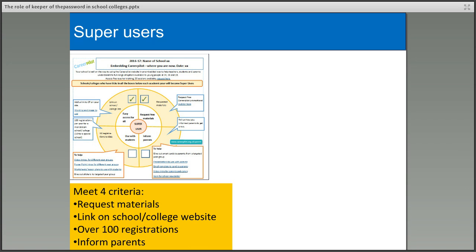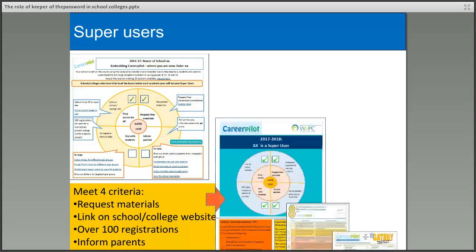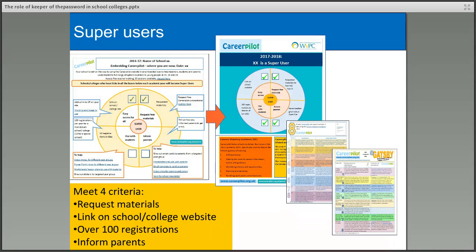We're also encouraging schools and colleges to become Super Users. To achieve this status you need to meet four criteria: you've requested Career Palette materials, you have a link on your school or college website to Career Palette, you have over 100 registrations per academic year, and you've informed parents about both the main site and the parent zone. If you comply with these criteria and achieve Super User status, you get a poster showing how it maps to the careers statutory guidance and Gatsby Benchmarks, and we'll send you another free set of promotional materials.